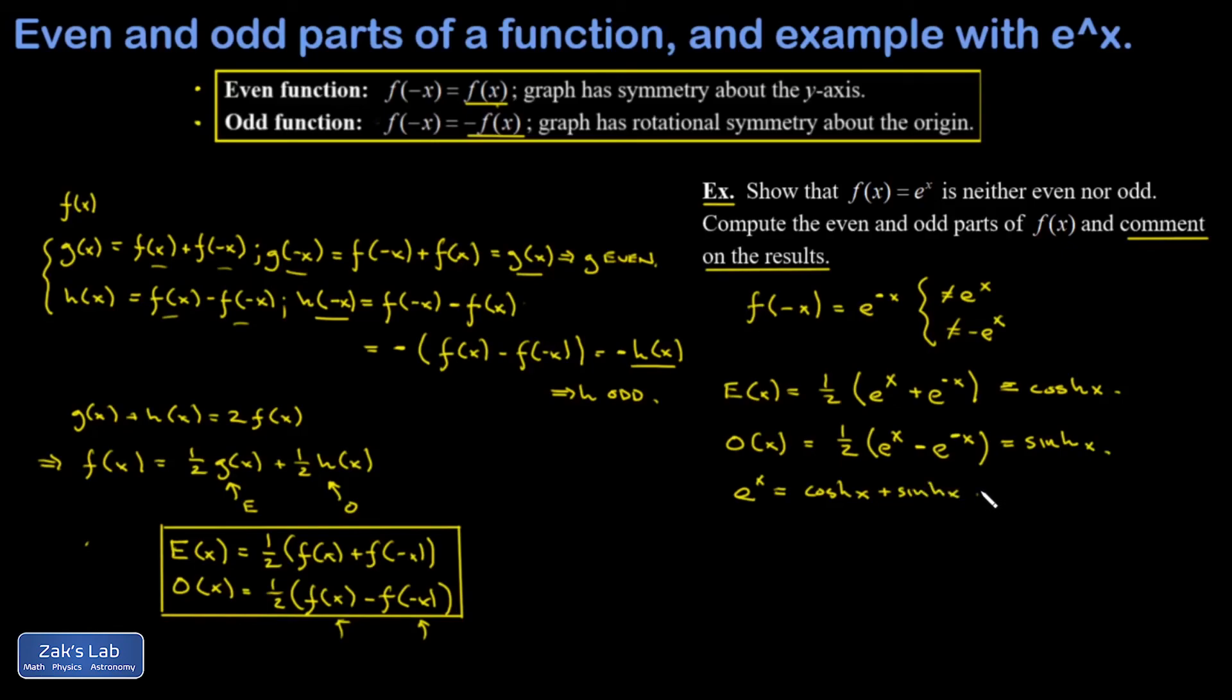And cosh is the even part and sinh is the odd part. So how cool is this: we can start with a function that does not have even symmetry or odd symmetry, that's e to the x right there, and we can break it down into a function that has even symmetry, that's the cosh function, and a function that has odd symmetry, that's the sinh function.